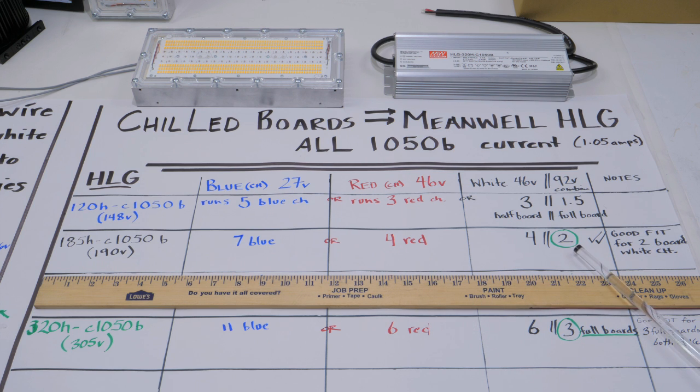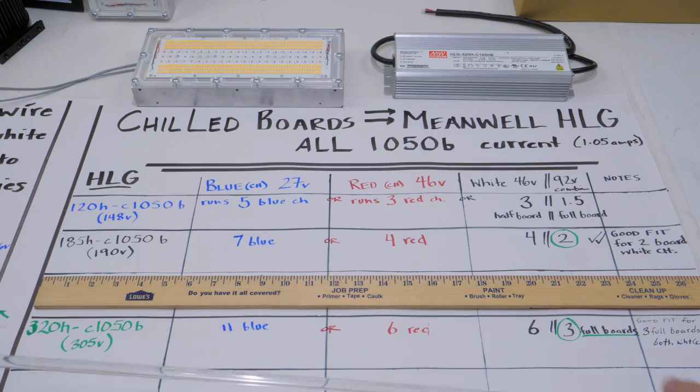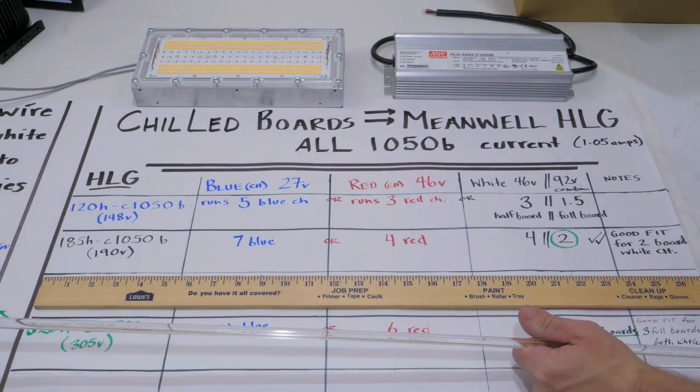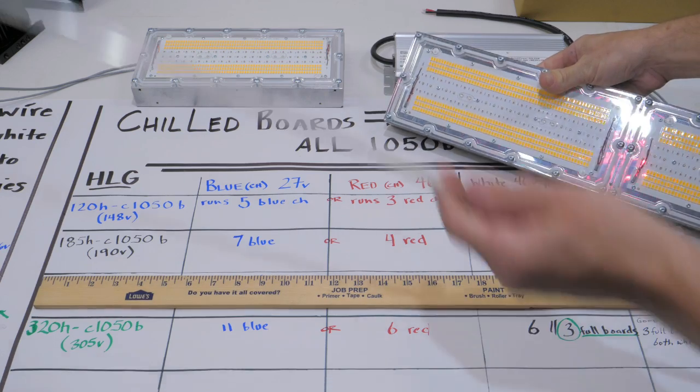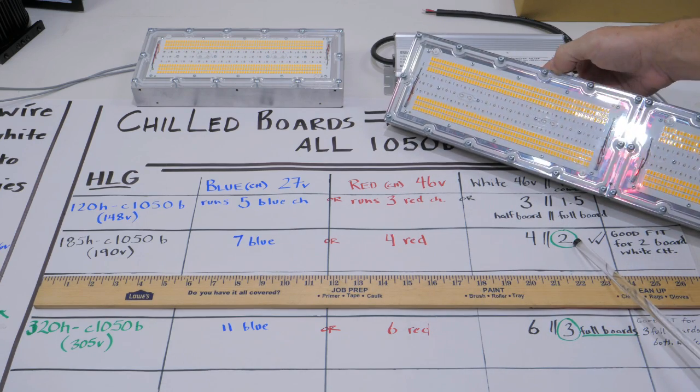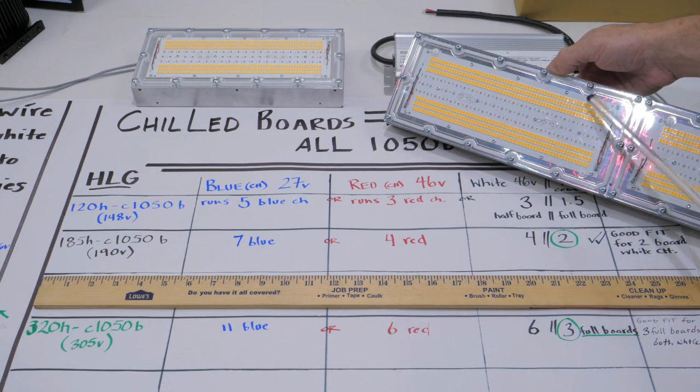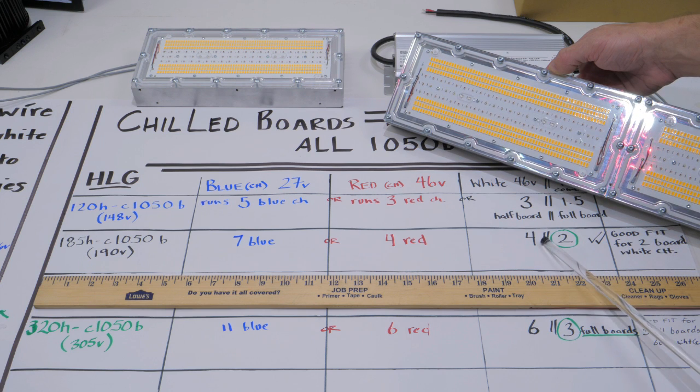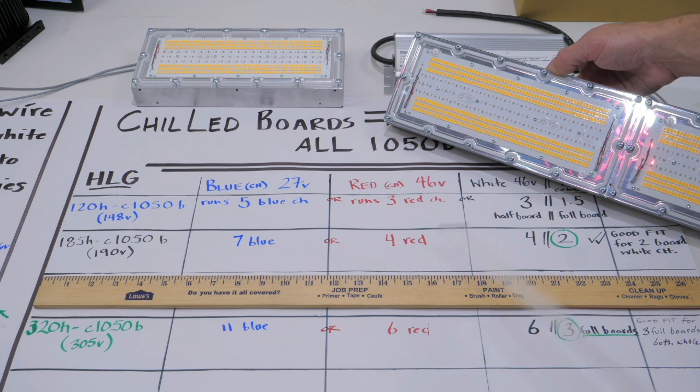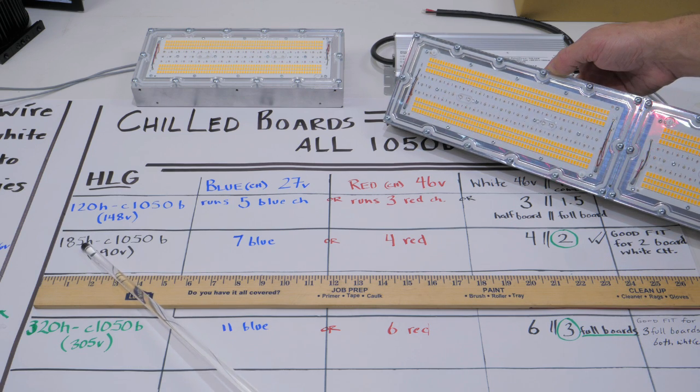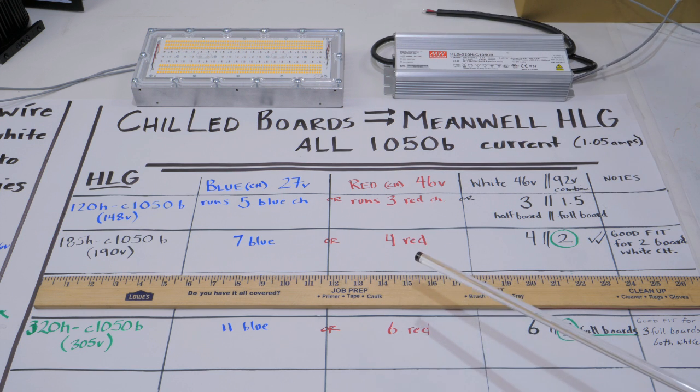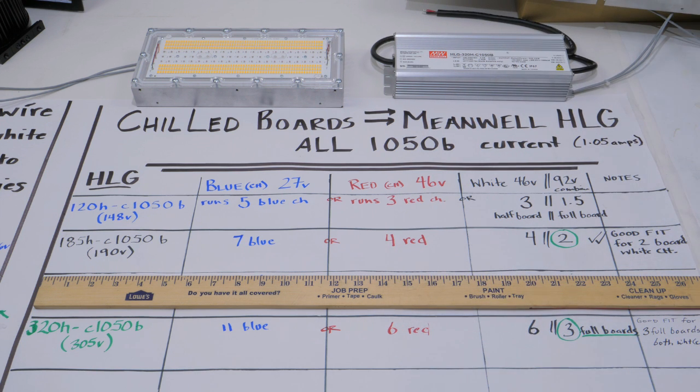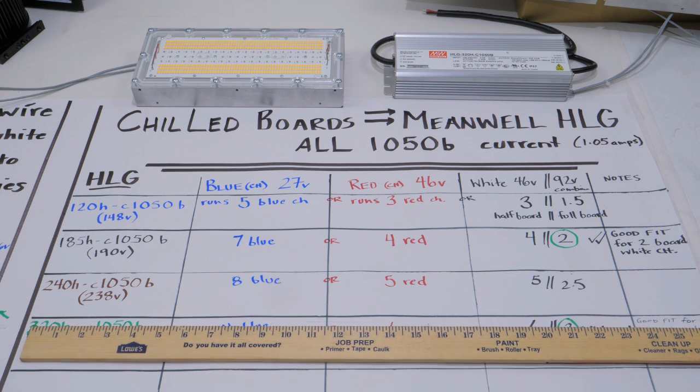If you bump up to the 185-1050, seven blue channels - again, probably too much for the blue - but it runs four red, which is great for your four board configurations. It will also run two full boards of white, meaning it's got 190 volts, so it runs two full boards. If you're doing a two board config like I'm showing here, the single heat sink with two boards on it, check out that 185 HLG at 1050, and it's just going to run all the whites for two boards.